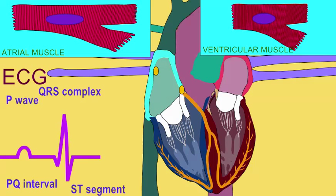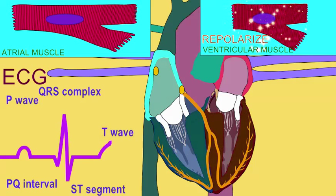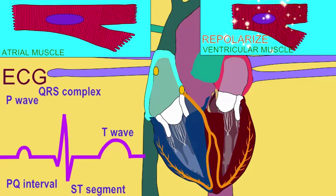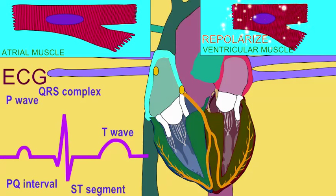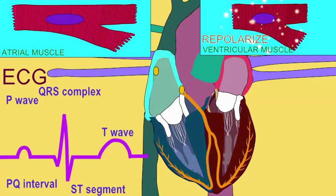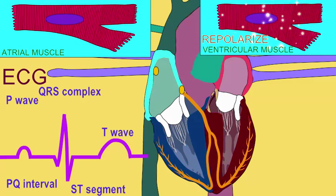When the cardiac muscle fibers repolarize, thus ending their electrical activity in this cardiac cycle, the wave of repolarization is visualized as the T wave of the ECG.